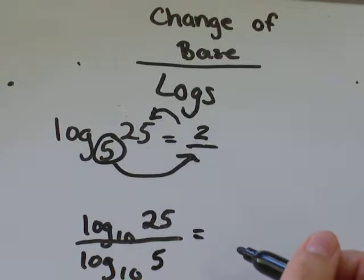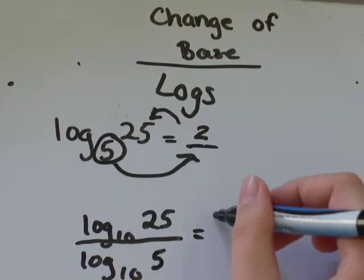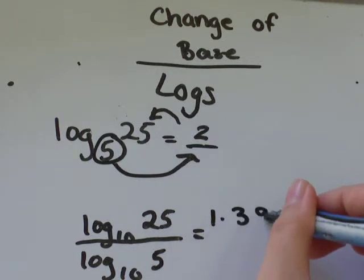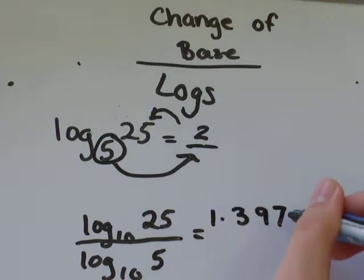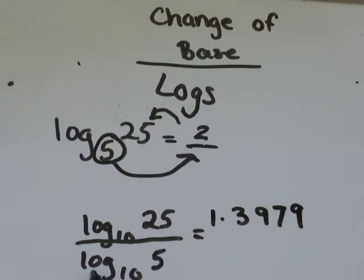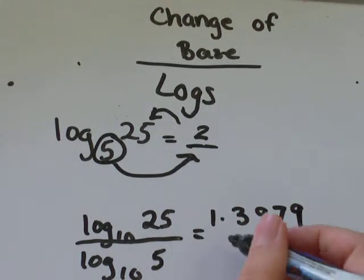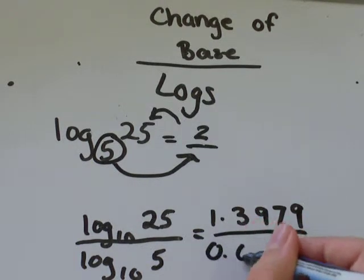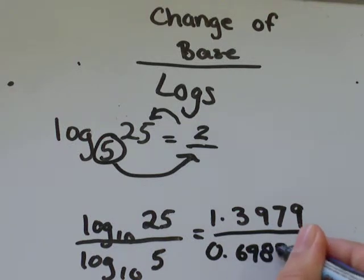I'm just going to type in on my calculator log of 25 and I get approximately 1.3979. I'll type in log 5 on my calculator and I'll get 0.69897.